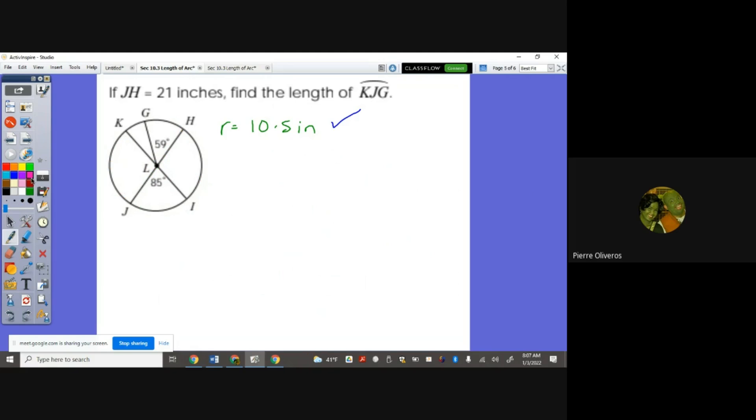So I know that these are vertical angles. This is 85, so this should be equal to 85. But that portion is 59. So in order for me to get this central angle here, I have to subtract it. So 85 minus 59 will give me 26. So therefore this portion here is 26 degrees.